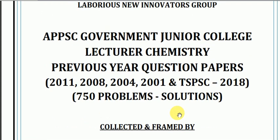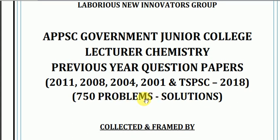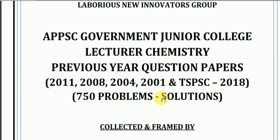If you have any other papers related to the state government junior college lecturer Chemistry, the previous question papers include 2011, 2008, 2004, and 2001. The TSPSC 2018 paper is also included. Across 5 papers there are around 750 problems.